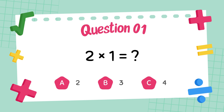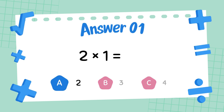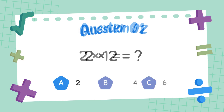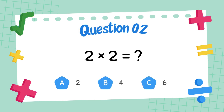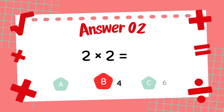What is 2 times 1? The answer is 2. What is 2 times 2? The answer is 4.